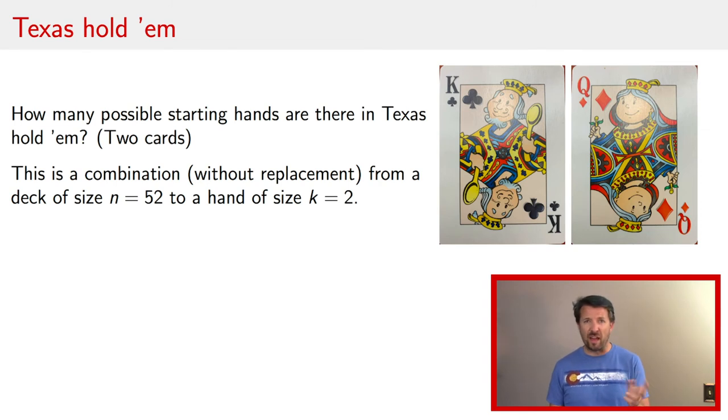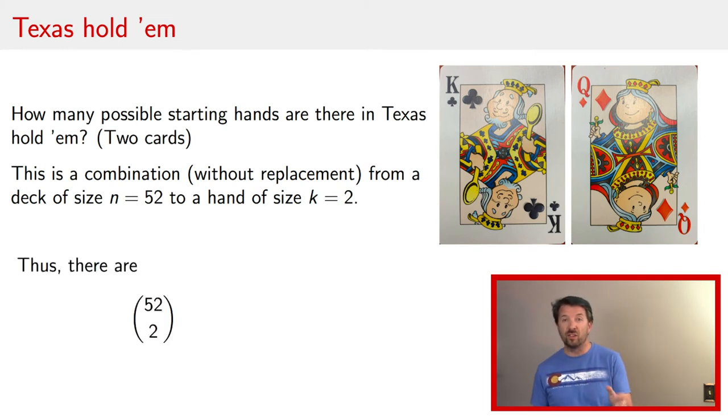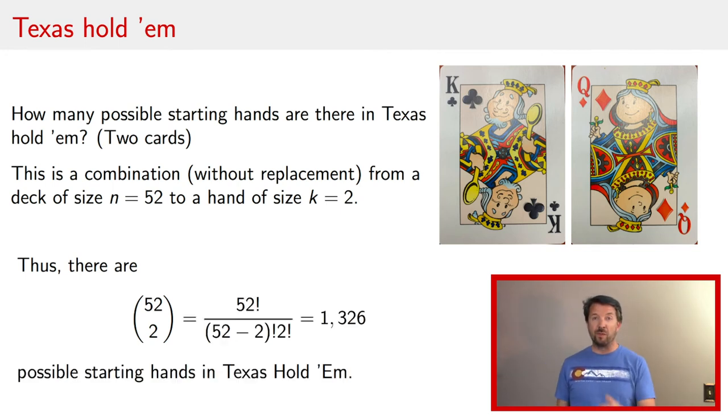And the order doesn't matter, which means it's a combination. And you don't put the cards back in to redraw the card. So that's without replacement. So this is a combination without replacement from a deck of size 52 to a hand of size 2. So there are 52 choose two ways of drawing those cards when the order doesn't matter. That turns out to be about 1300 different starting hands in the game of Texas Hold'em.